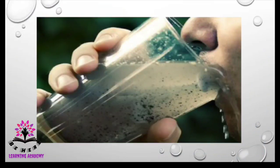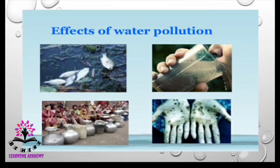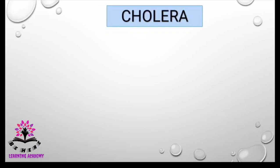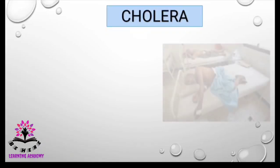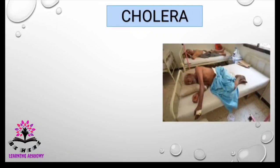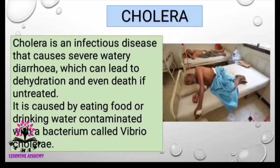What happens when you drink impure water? The effects of water pollution include: death of fish and animals, and diseases in humans. The main disease caused by drinking impure water is cholera. It is an infectious disease that causes severe watery diarrhea, which leads to dehydration and even death if untreated. It spreads from person to person.